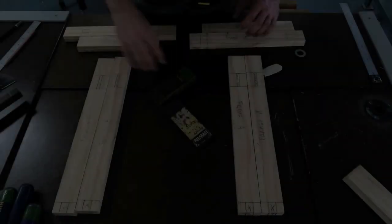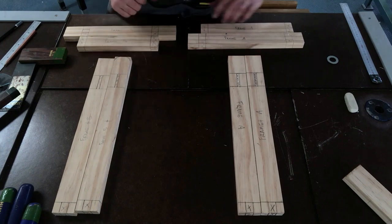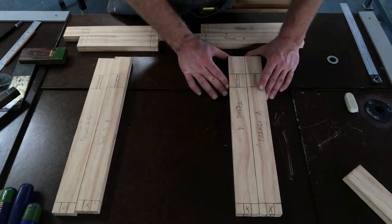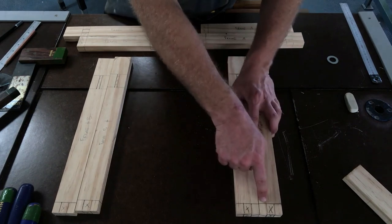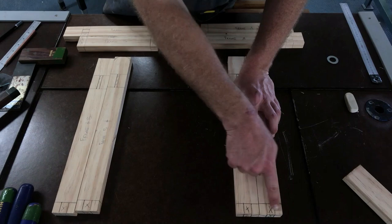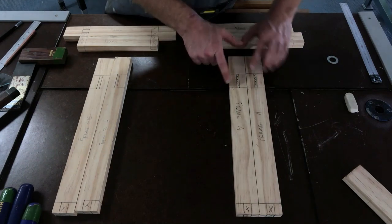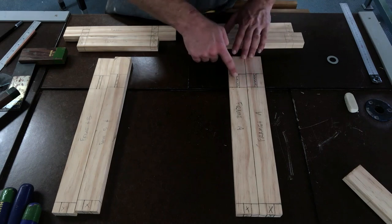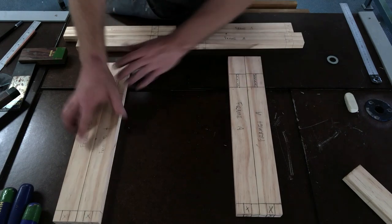After you finish marking everything out, it's really important to do a few checks before we start cutting into things. For example, with the legs on frame A, make sure that at the top the bridle joints match up. Check down at the bottom that the lines match up on the heights of your mortise. Do the same for frame B.